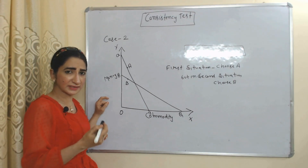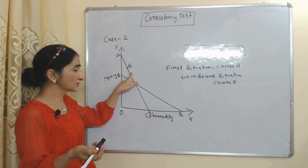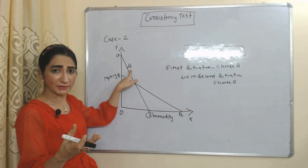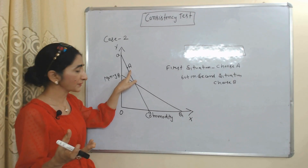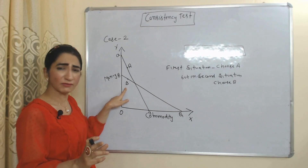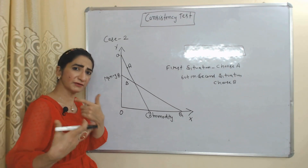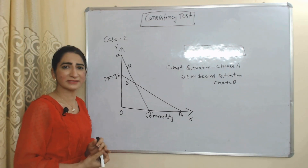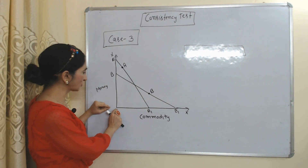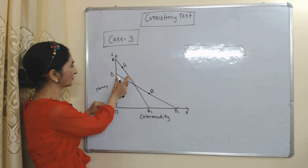The behavior is definitely consistent because in the first situation when both options were available the consumer chose A, since A is the first best option. In the second situation, A was not available so the consumer had to choose B. Therefore this behavior is called consistent.